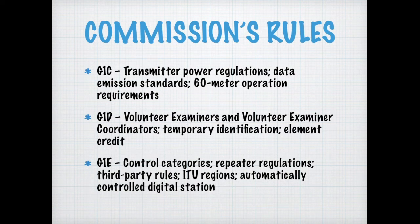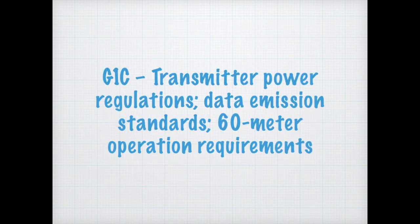G1C covers the transmitted power regulations, data emission standards, and 60-meter operation requirements. G1D is volunteer examiners and volunteer examiner coordinators, temporary identifications, and element credits. G1E is controlled categories, repeater regulations, third-party rules, ITU regions, and automatic control of digital stations. So let's dive into the transmitter power regulations, data emission standards, and the 60-meter operation requirements.